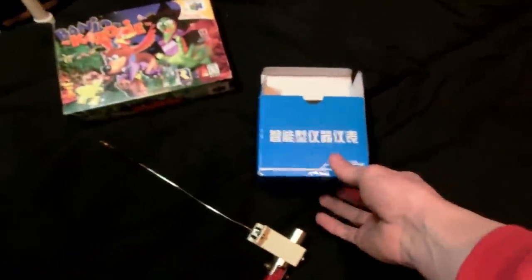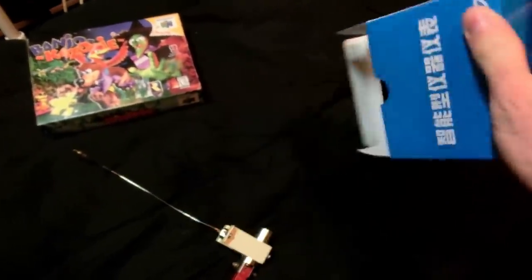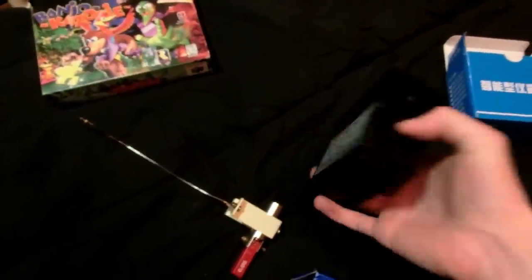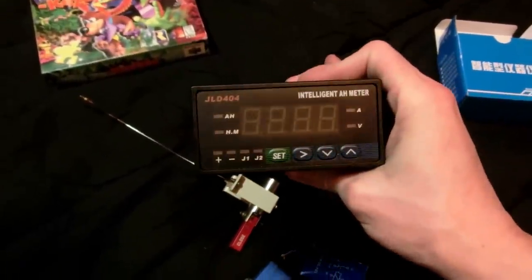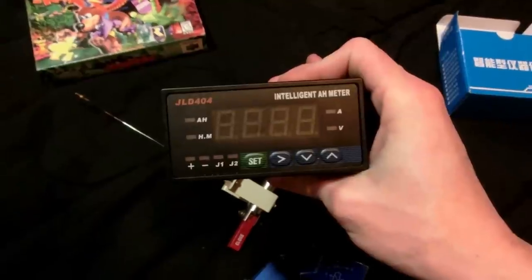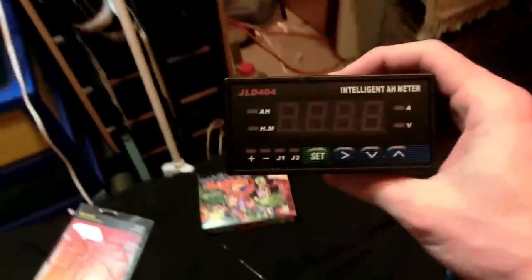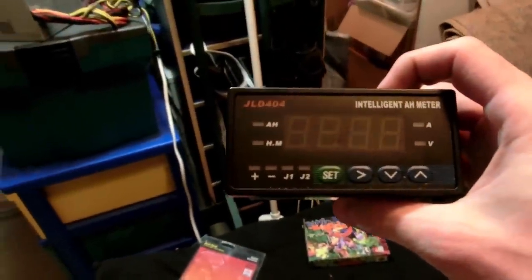Then the final bit, the most expensive piece here. A JLD404. This is an amp hour meter. This thing can read volts, amps, and amp hours. It will count up amp hours. I'm going to have this on my tricycle, probably here or so.